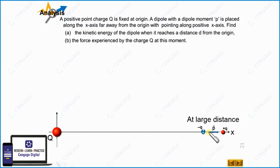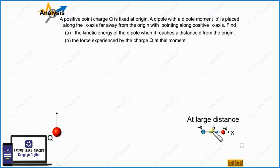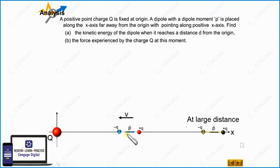Electrostatic forces always occur in pairs: since this charge particle is attracted toward the dipole, the dipole will also be attracted toward the charge particle. So when we release this dipole, it will start moving along the x-axis in the negative x direction. The dipole is released and has reached a position at distance d from the origin, and at this moment the velocity of the dipole is v.